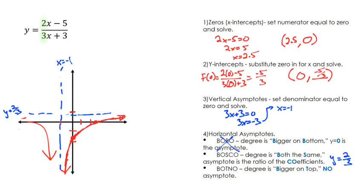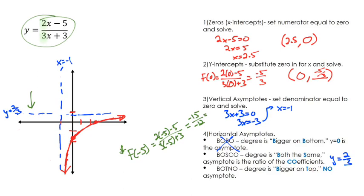But our way that we can figure it out or that I like to figure it out, just to play it safe, is why don't I just take some random number over here like a negative 5 and substitute it into our function. So if I were to say, what's f of negative 5? I would get 2 times negative 5 minus 5 and 3 times negative 5 plus 3. If I simplified that, that would be negative 15 over negative 12, or a positive 15 twelfths.